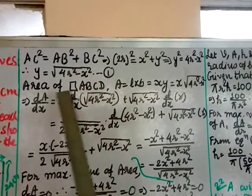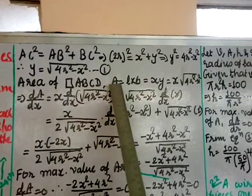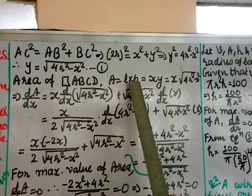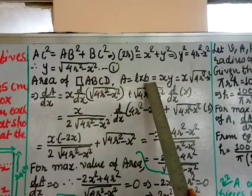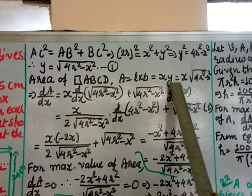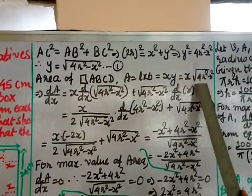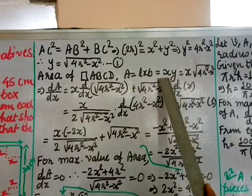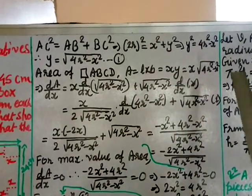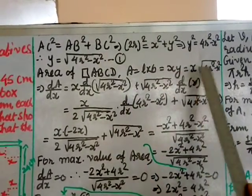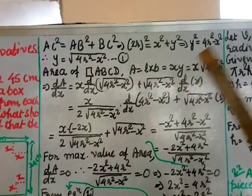Area should be maximum, so consider area of rectangle ABCD: A = length into breadth = x times y. Substituting y from equation 1: A = x times square root of (4r squared minus x squared). Since r is constant, we differentiate with respect to x only.